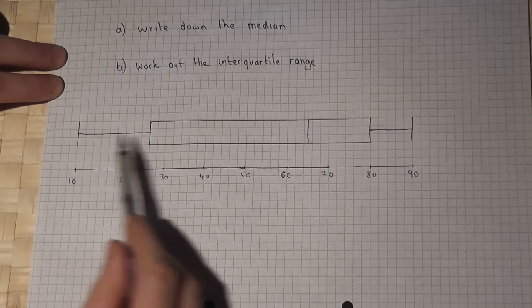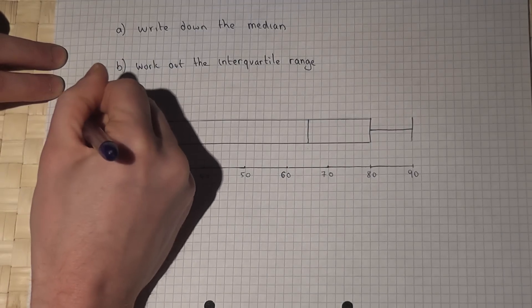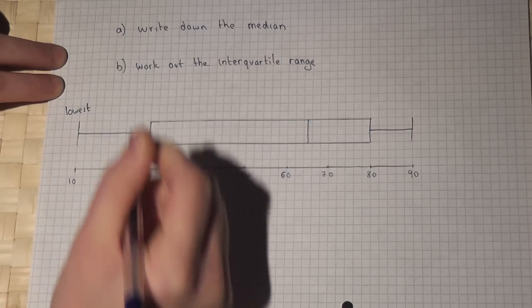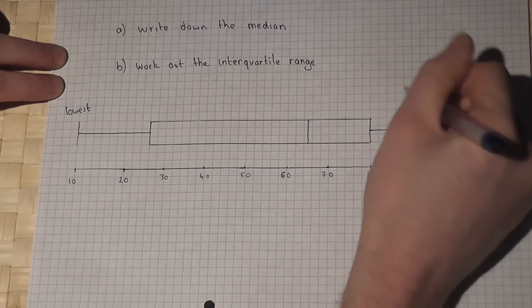Given a box whisker plot, this value here is the lowest or minimum value of 10. This is the highest value.